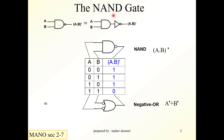The NAND gate is the complement of the AND gate — it is an AND gate followed by an inverter. This bubble here represents the inversion of the AND output. This is the symbol for the NAND gate, and the output of this AND gate complemented is A·B bar.